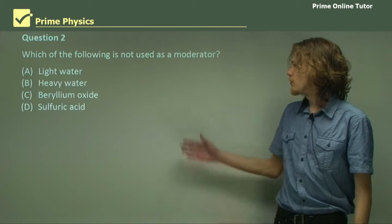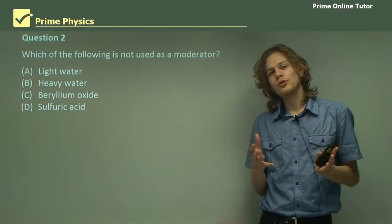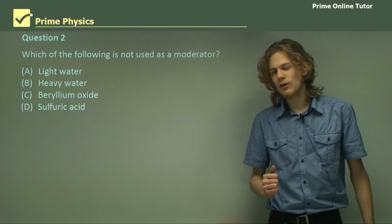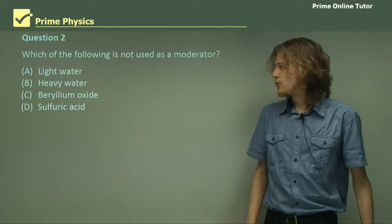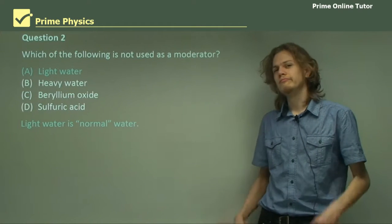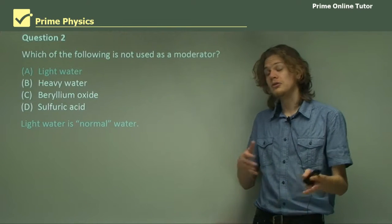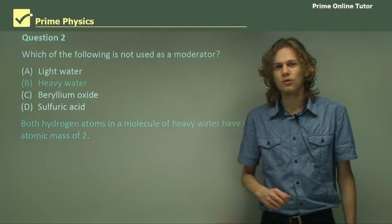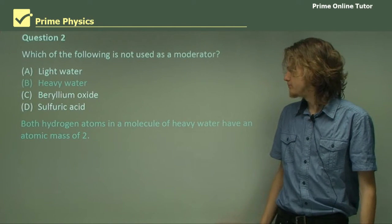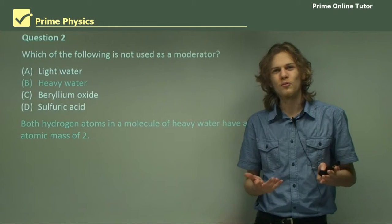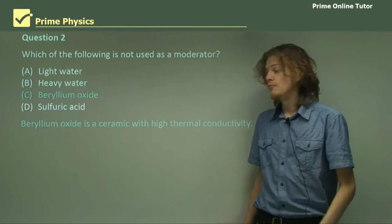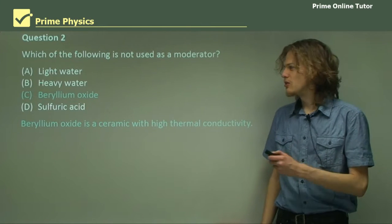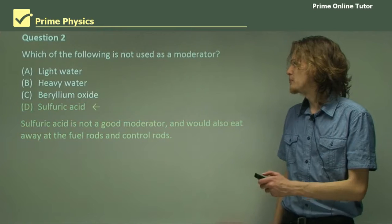Question two: Which of the following is not used as a moderator? The first moderator used was graphite, but today nuclear reactors use different moderators. Light water is used as a moderator — that's normal water, hydrogen-1 and oxygen. Heavy water, which is hydrogen-2 and oxygen or deuterium and oxygen, is a good moderator. Beryllium oxide is used as a moderator in some reactors, though not as commonly as water. Sulfuric acid is in fact the correct answer — it is never used as a moderator.